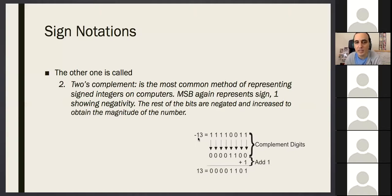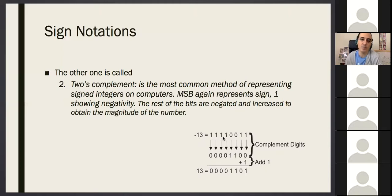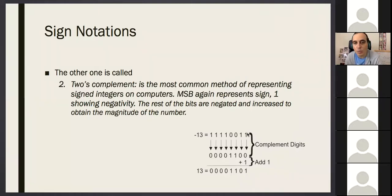For example, in two's complement, this is how you represent minus 13. You look at this number — the MSB is 1 so it's a negative number in two's complement. To find the magnitude, you complement all the bits and add one: 1 plus 4 plus 8 equals 13. That's why this number is minus 13. That's how you calculate it.